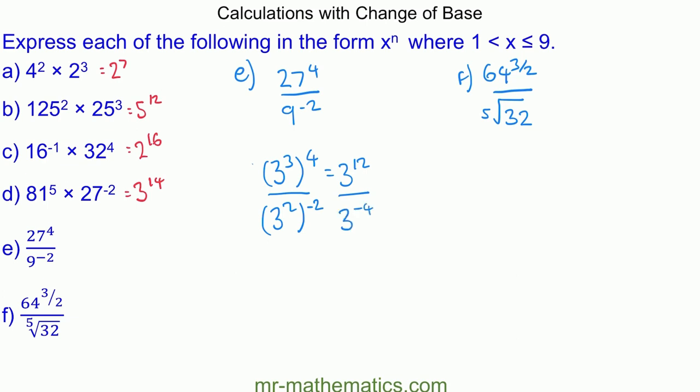Using the division rule, we subtract the powers: 3 to the power of 12 minus the negative 4, giving 3 to the power of 16.